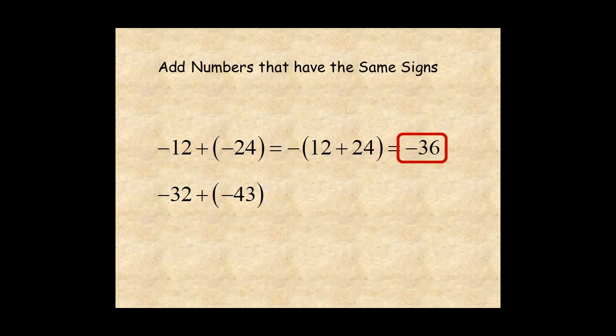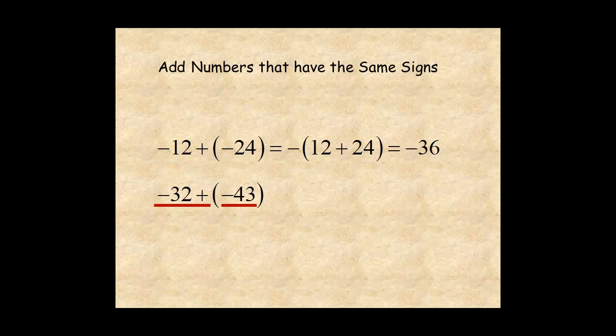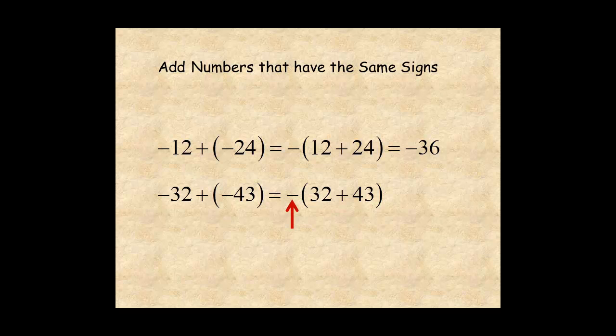To add negative 32 plus negative 43, find the sum of the absolute values of the two numbers, 32 plus 43. The sign of the sum is negative because the sign of the two numbers is negative. The answer is negative 75.